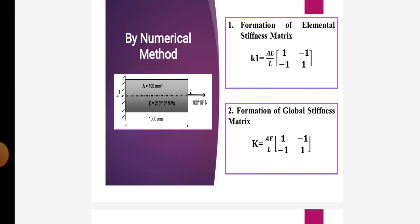In the second step, formation of the global stiffness matrix: K1 is equal to A1 times the matrix [1, -1; -1, 1].